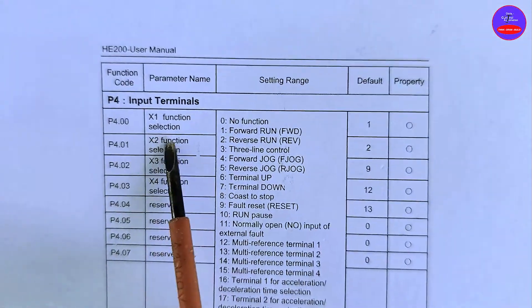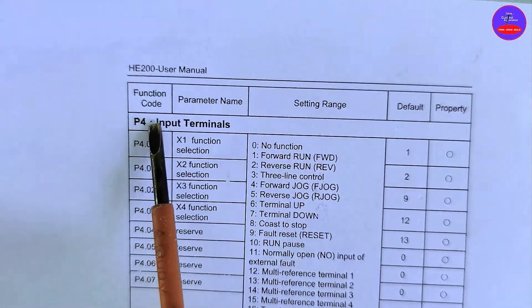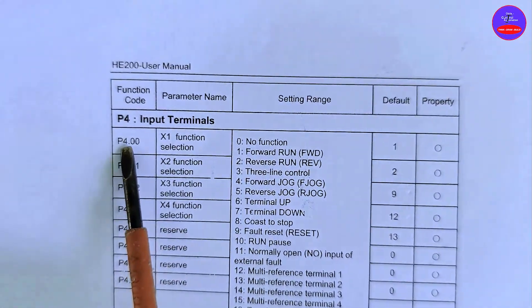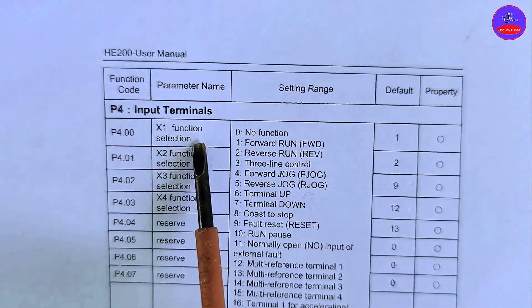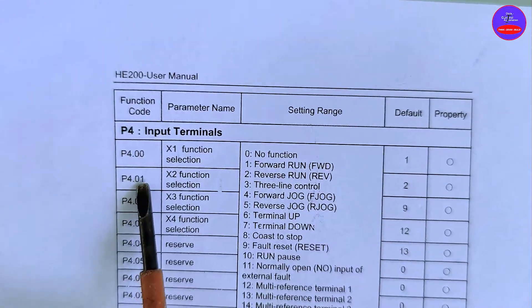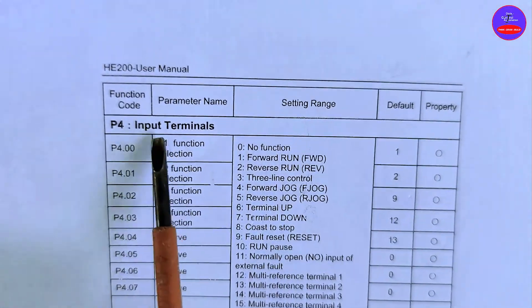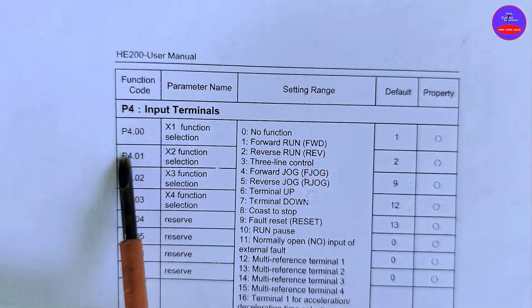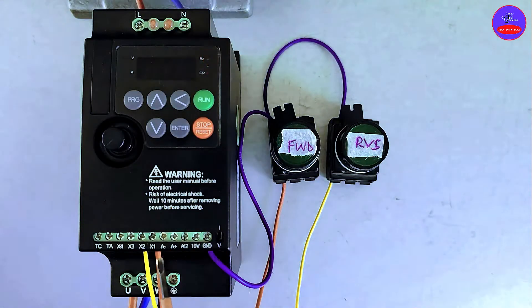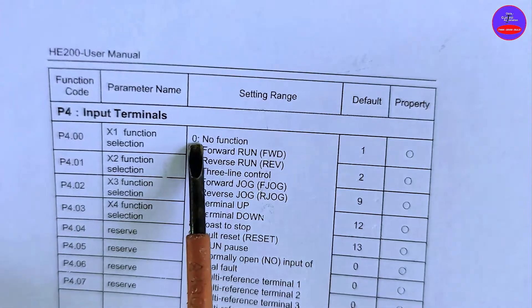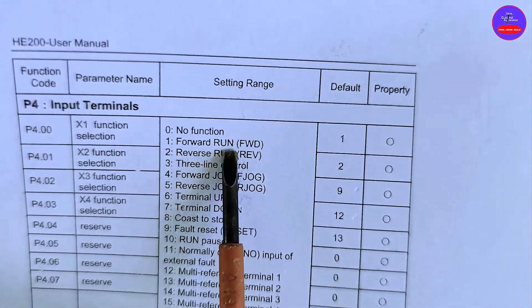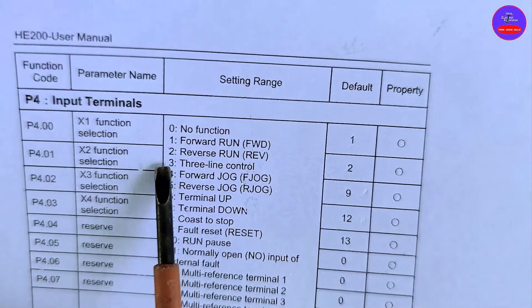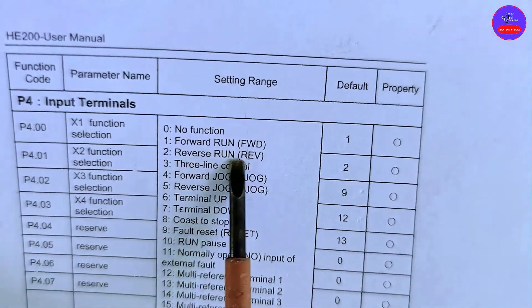On this manual we have P4 input terminals. P4.00 is X1 function selection. P4.01 is X2 function selection. We are going to use these two functions since we selected X1 and X2. Zero is no function, one is forward run, two is reverse run.